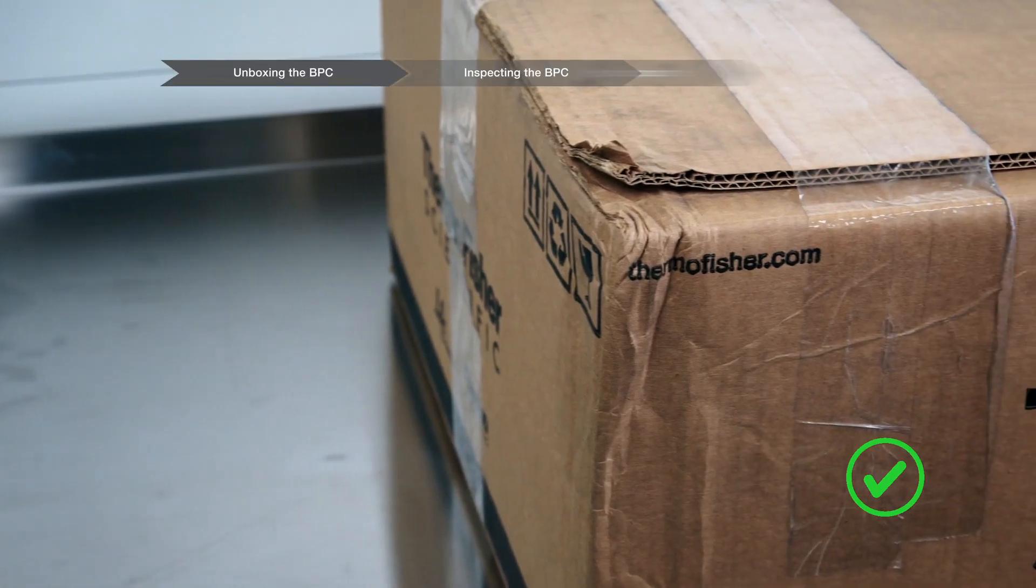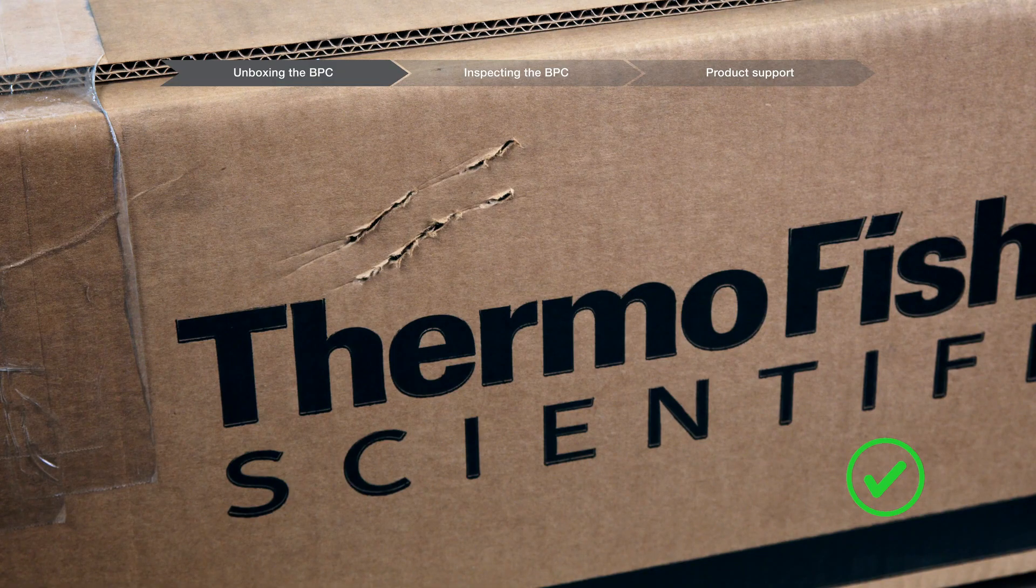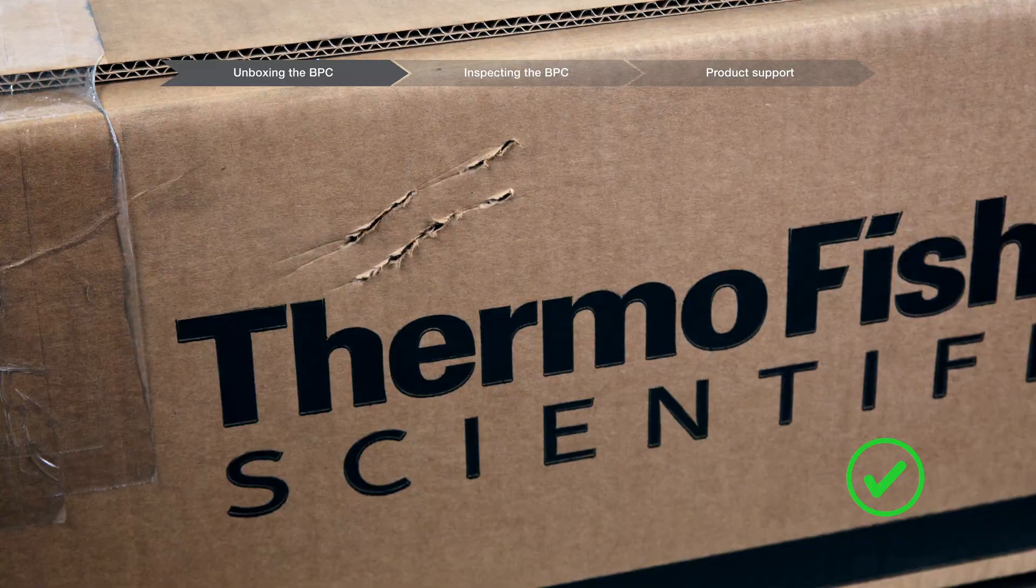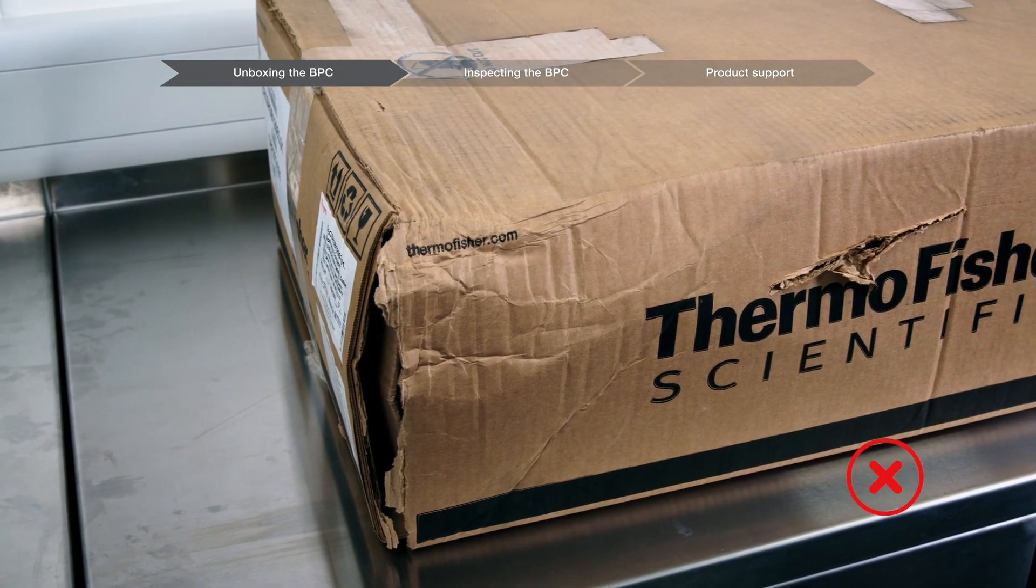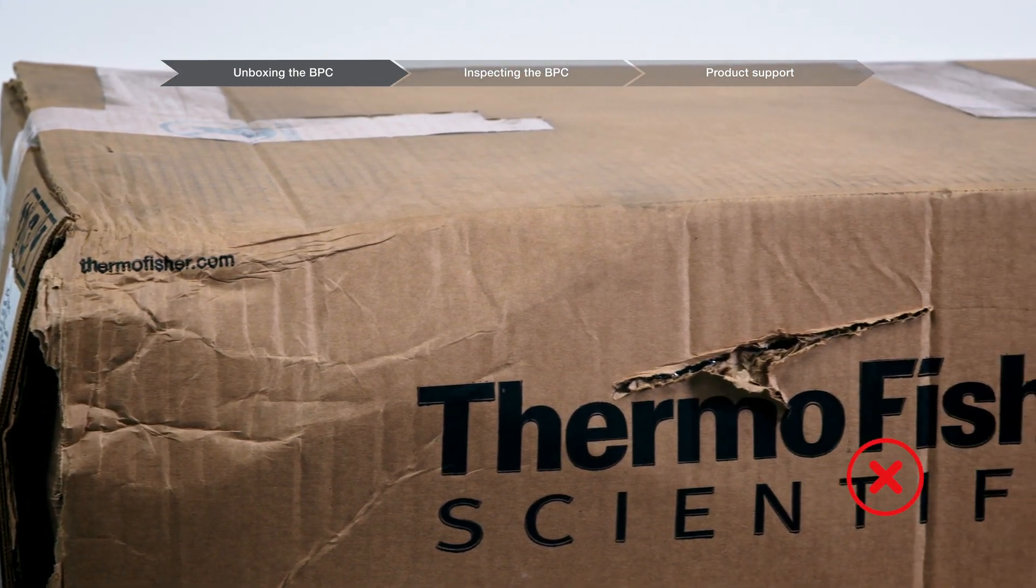The BPC is still usable if the shipping box arrives with a worn box corner or a minor perforation on the box. If your box arrives crushed or with a puncture mark through the box, do not unbox the BPC. Contact your sales representative.